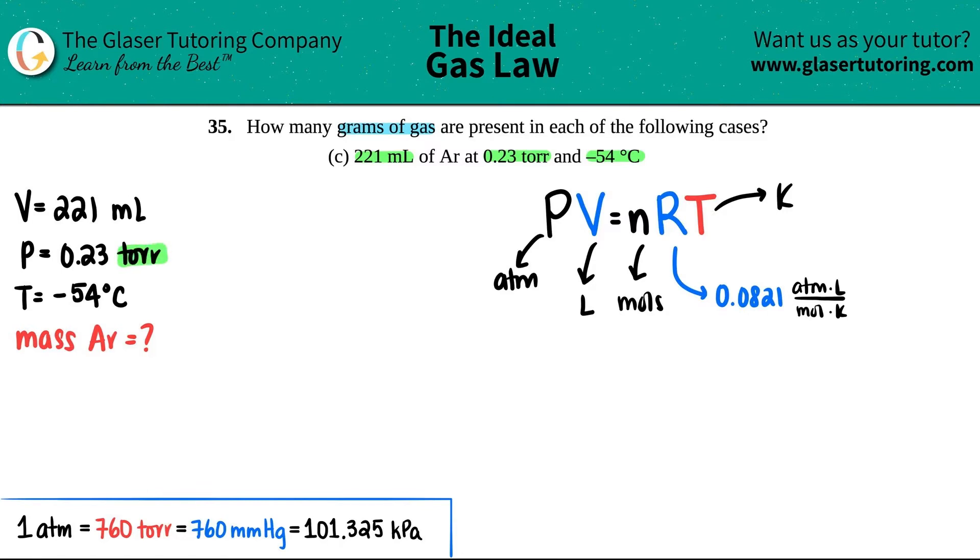All we have to do is just convert from torr to atm using dimensional analysis. That's why I wrote the big four down here, which you should memorize or maybe your teacher will give this information to you on the test. One atm is always equal to 760 torr.